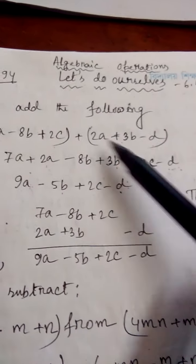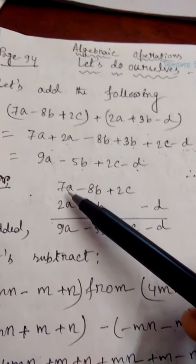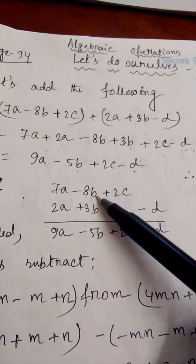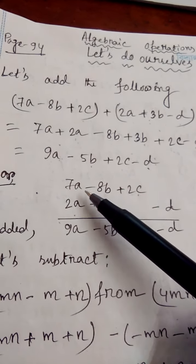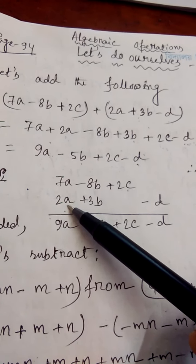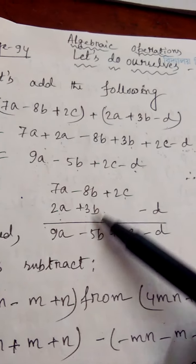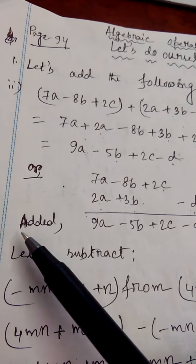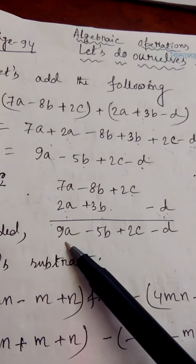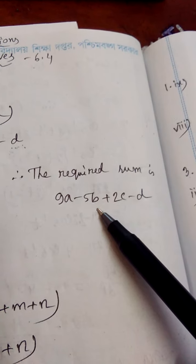We can add these algebraic expressions in another method. The first expression 7a minus 8b plus 2c is written, then the second expression is written vertically downwards. The like terms are written vertically downwards: 2a under 7a, plus 3b under minus 8b. The unlike term is written separately. After addition, 7a plus 2a is 9a, minus 8b plus 3b equals minus 5b, giving the required sum: 9a minus 5b plus 2c minus t.